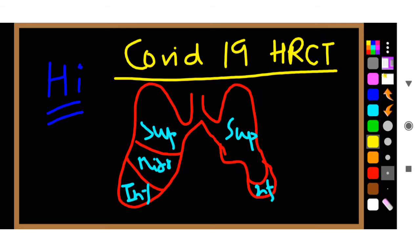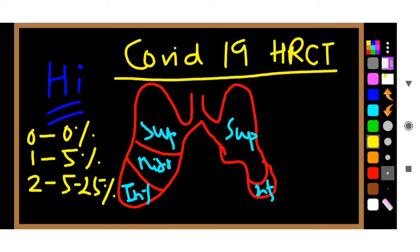I am writing it out here. 0 means 0 percent lung is involved. 1 means 5 percent lung is involved. 2 means 5 to 25 percent is involved.